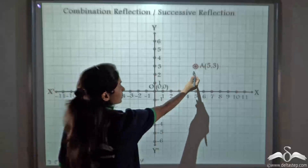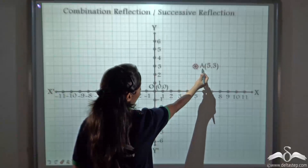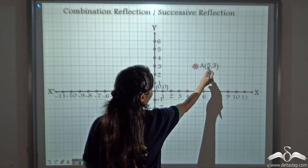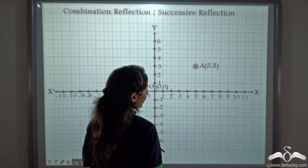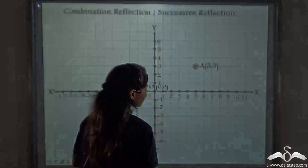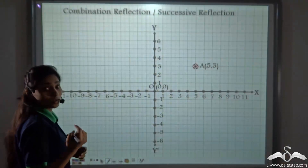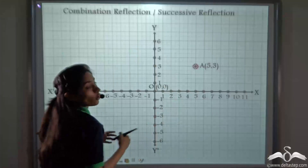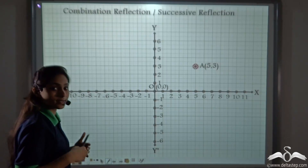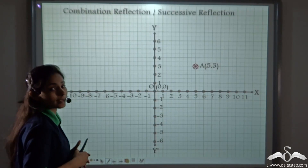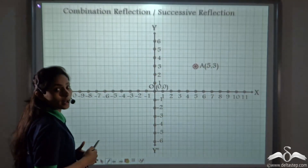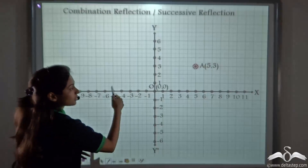Now we have placed this candy at point A, with x coordinate as 5 and y coordinate as 3. We will reflect this point on both mirrors — both on the y-axis and the x-axis. First, considering y as the mirror, let's reflect this point.